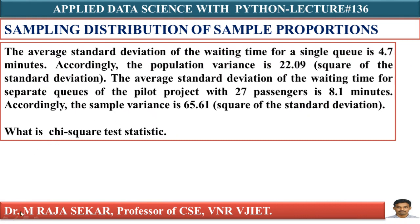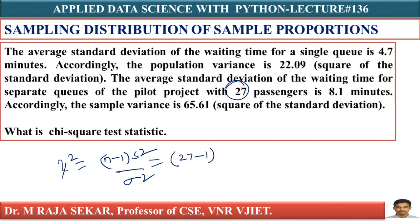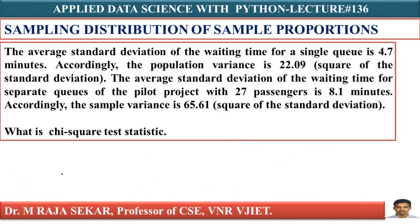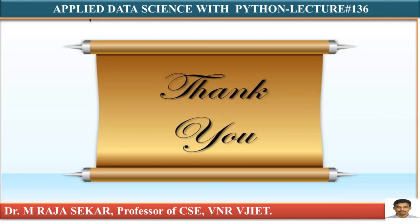To calculate the chi-square value, the formula is (n−1)·S²/σ². With n = 27 passengers as sample size, sample standard deviation s = 8.1, and population standard deviation σ = 4.7, we get: χ² = (27−1) × (8.1)² / (4.7)² = 77.22. I will discuss more problems on chi-square distribution in hypothesis testing lectures. Thank you.